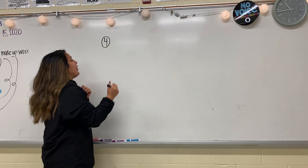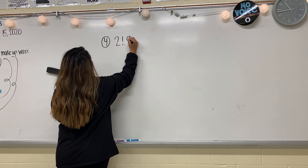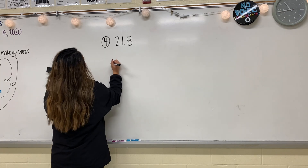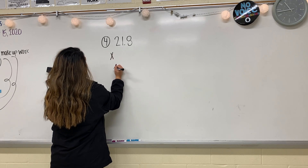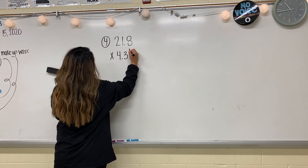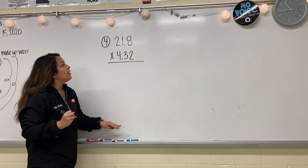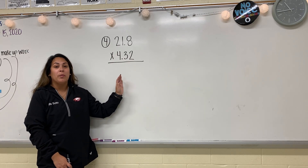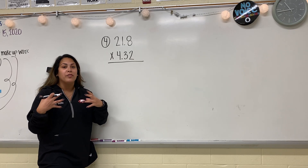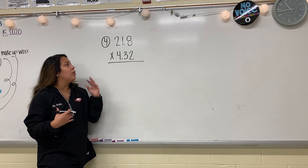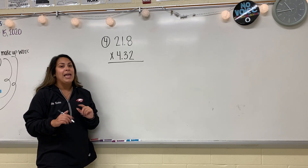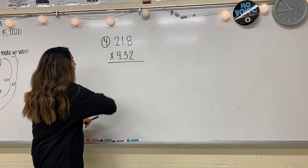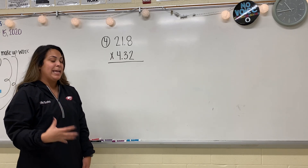So now we're going to do 21 and eight tenths times four and 32 hundredths. Again, we do not need to line up the decimal points when we multiply — because if you do that, you're going to get confused. That is only when we add and subtract. So now I'm going to work this again just like it's a basic multi-digit multiplication problem.